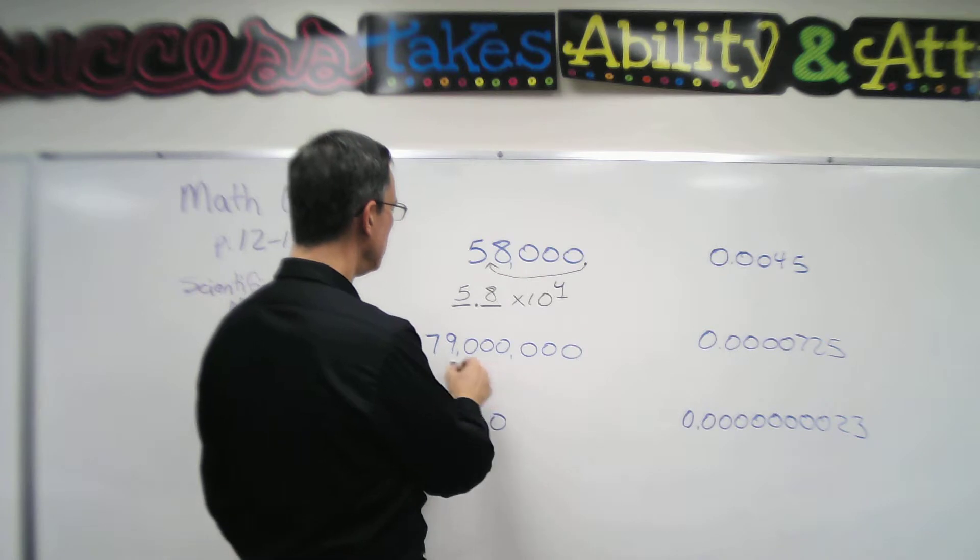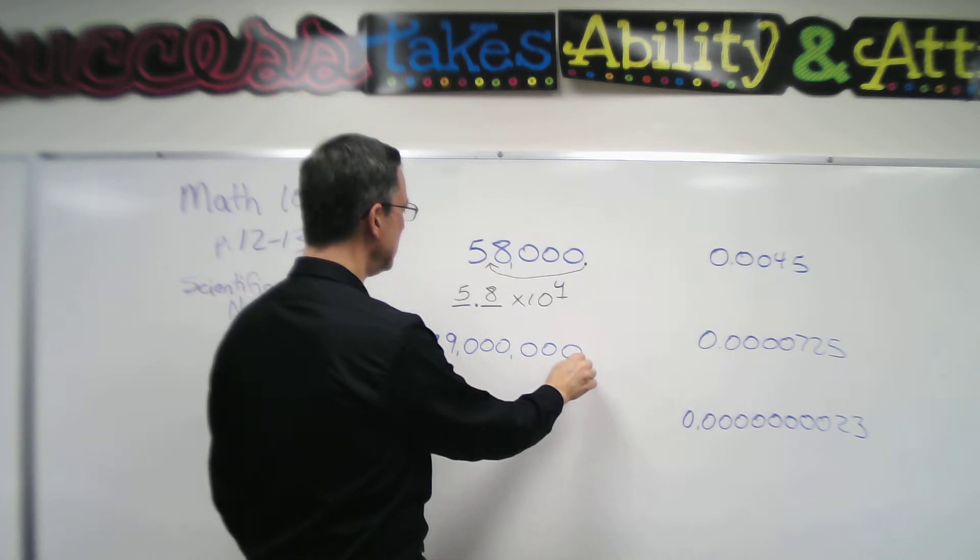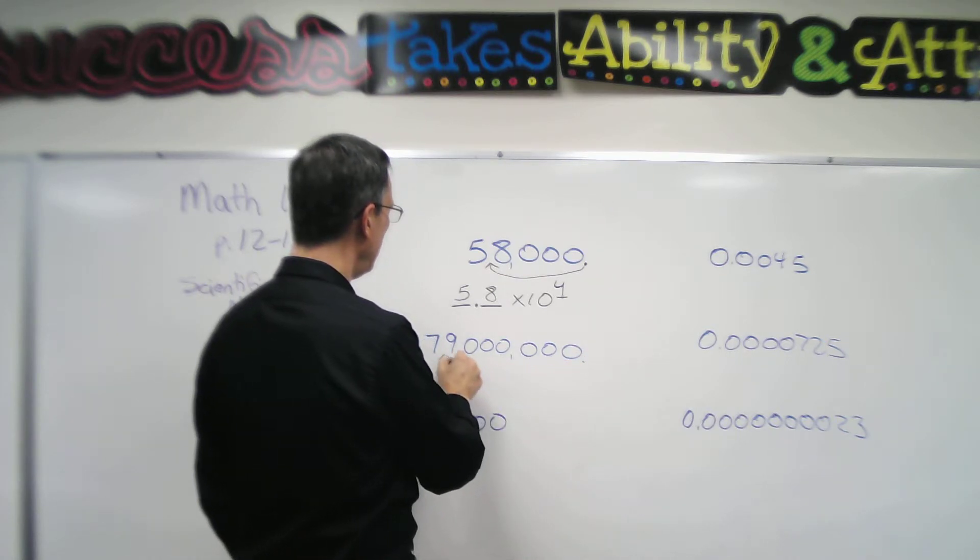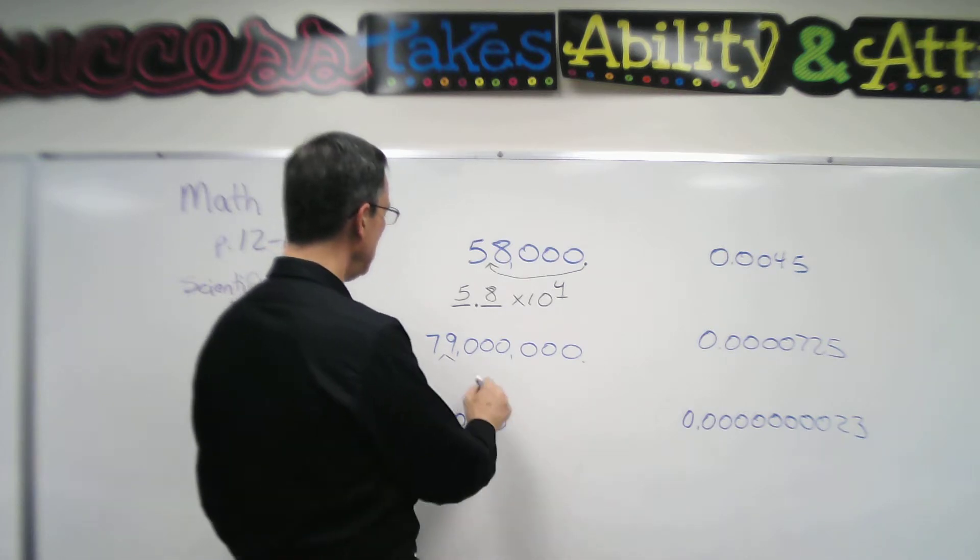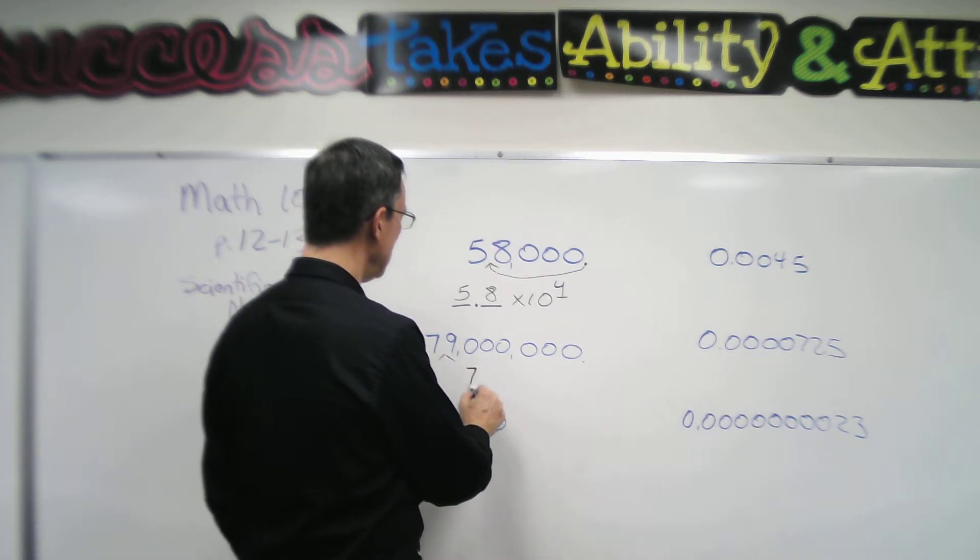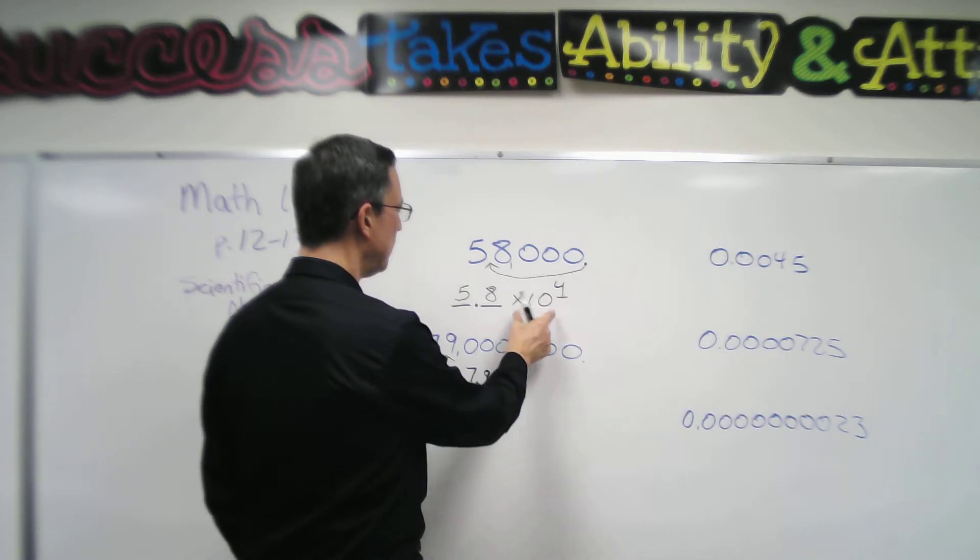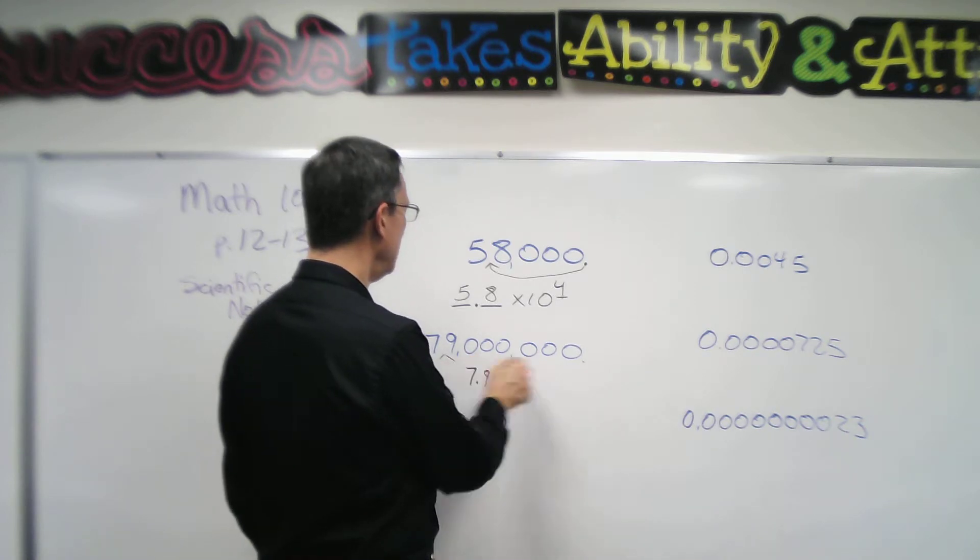Let's try it on this one. The decimal starts here; it has to go all the way to right there between the seven and the nine. So in scientific notation I would write 7.9 times 10. That's just part of the format.